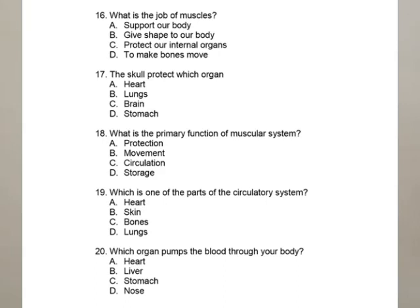Question 18: what is the primary function of the muscular system? The options are protection, movement, circulation, and storage. The right answer is movement. Question 19: what is one part of the circulatory system? The circulatory system is composed of the heart and blood. The options are heart, skin, bones, and lungs. Heart is the right answer. Question 20: which organ pumps blood through our body? The options are heart, liver, stomach, and nose. Heart is the right answer.